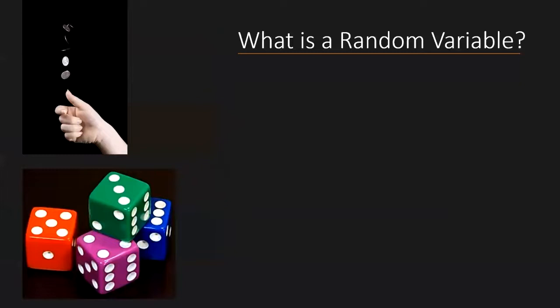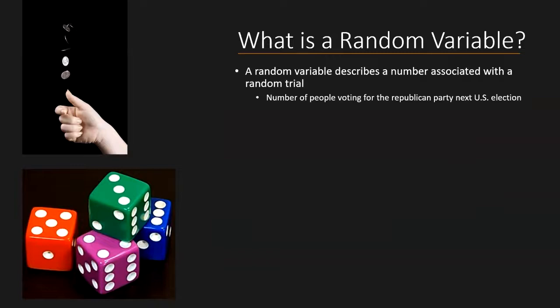I already gave a vague description of what a random variable was in the start of the video, but let's make it a bit more concrete now. Basically, a random variable describes a number that is associated with a random trial. And what do I mean by random trial? Well, I'm talking about some event in the real world. Either an event that happened in the past, that is happening right now, or that is going to happen in the future, of which you do not know the outcome. And I use the word number here to highlight that the values that this random variable can take will always be numeric.